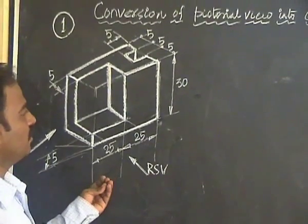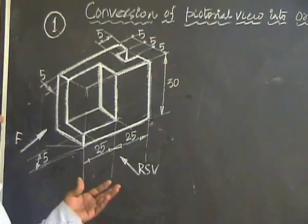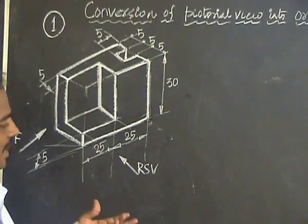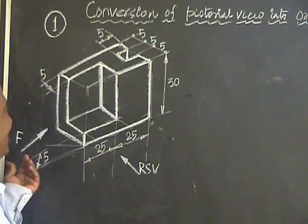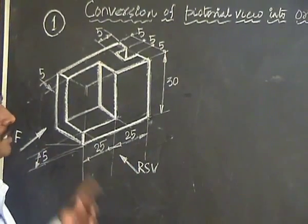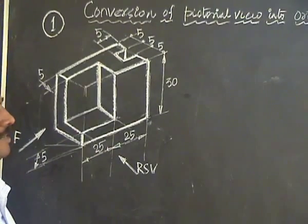Another point is that we give preference to three views. First view is front view, second view is top view, third view is right side view. So choose your direction in such a way that the right side view should be visible. That's the idea behind putting this as the front side and this as the right side.